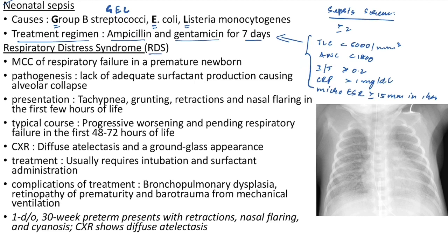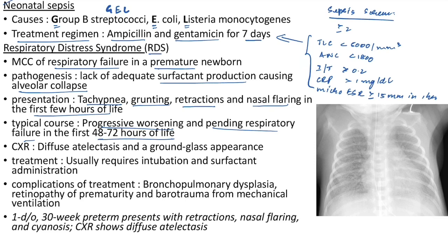Respiratory distress syndrome (RDS) is the most common cause of respiratory failure in a premature newborn. Pathogenesis: lack of adequate surfactant causing alveolar collapse. The infant presents with tachypnea, grunting, retractions, and nasal flaring in the first few hours of life. There will be progressive worsening in the first 48-72 hours. Chest X-ray shows diffuse atelectasis and ground-glass appearance. It usually requires intubation and surfactant administration.